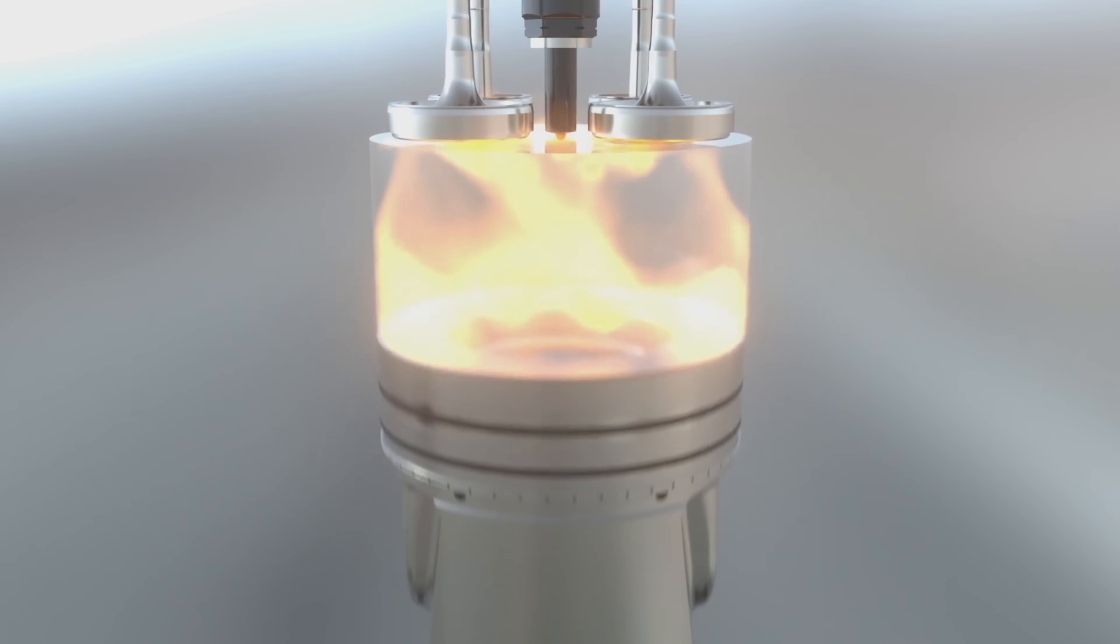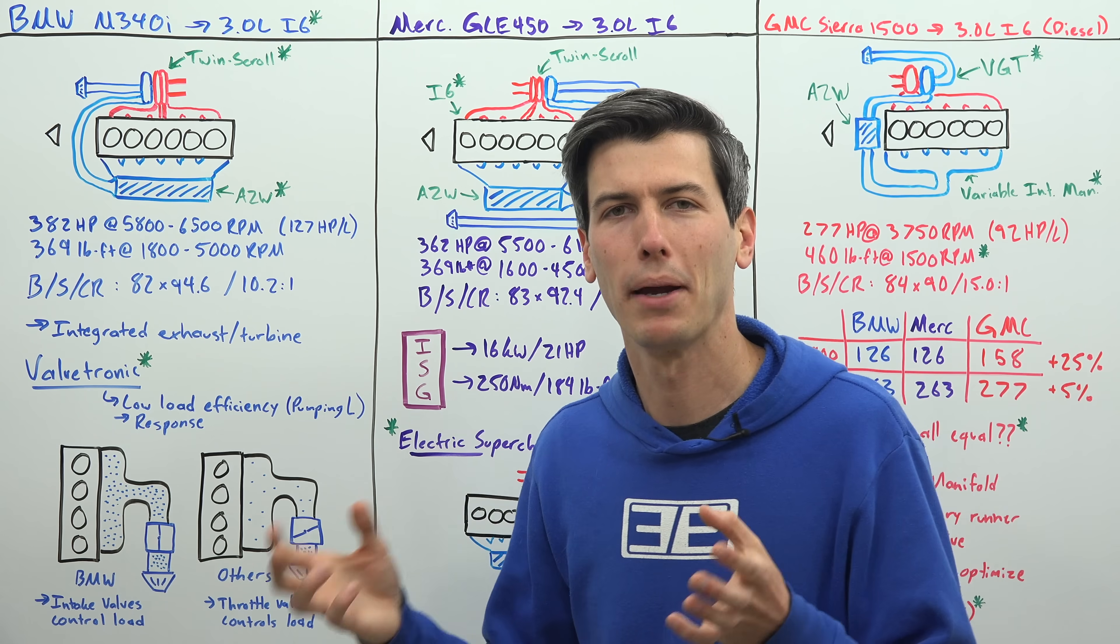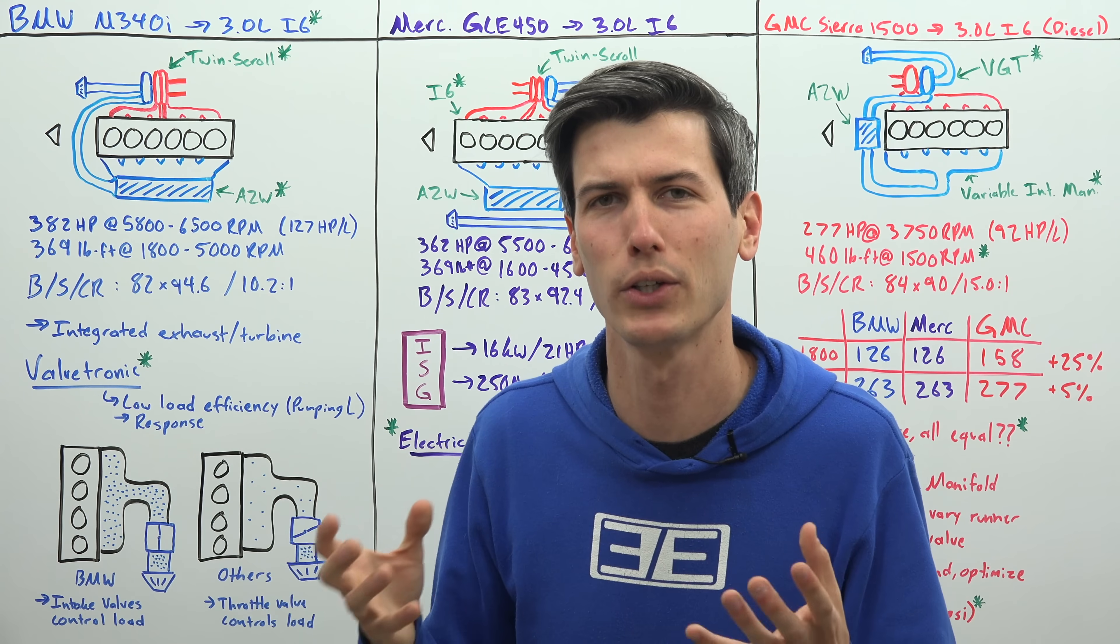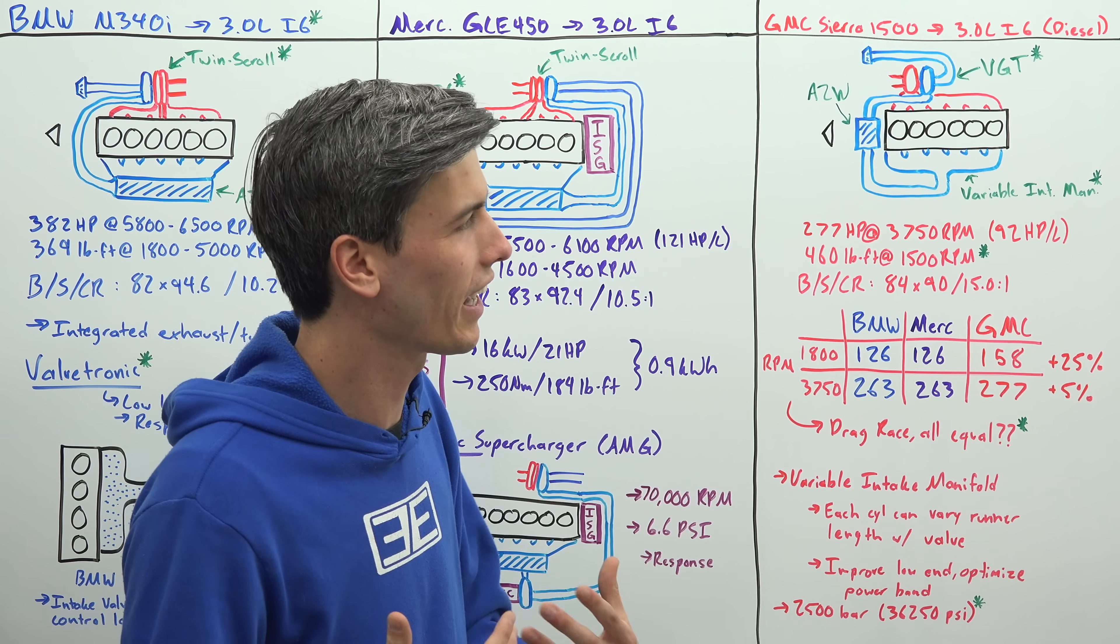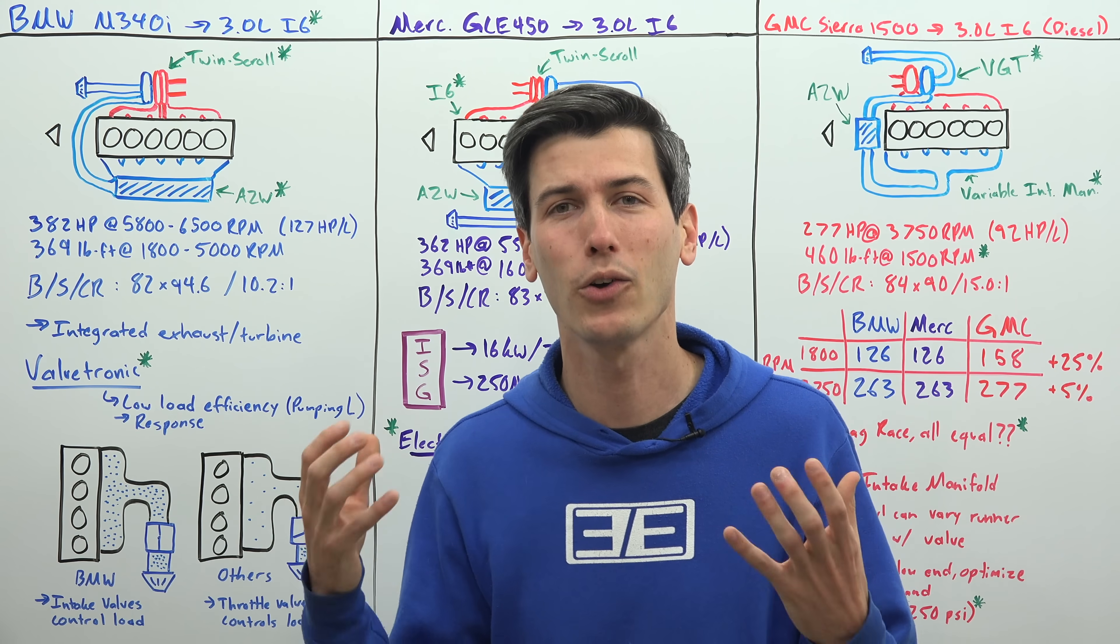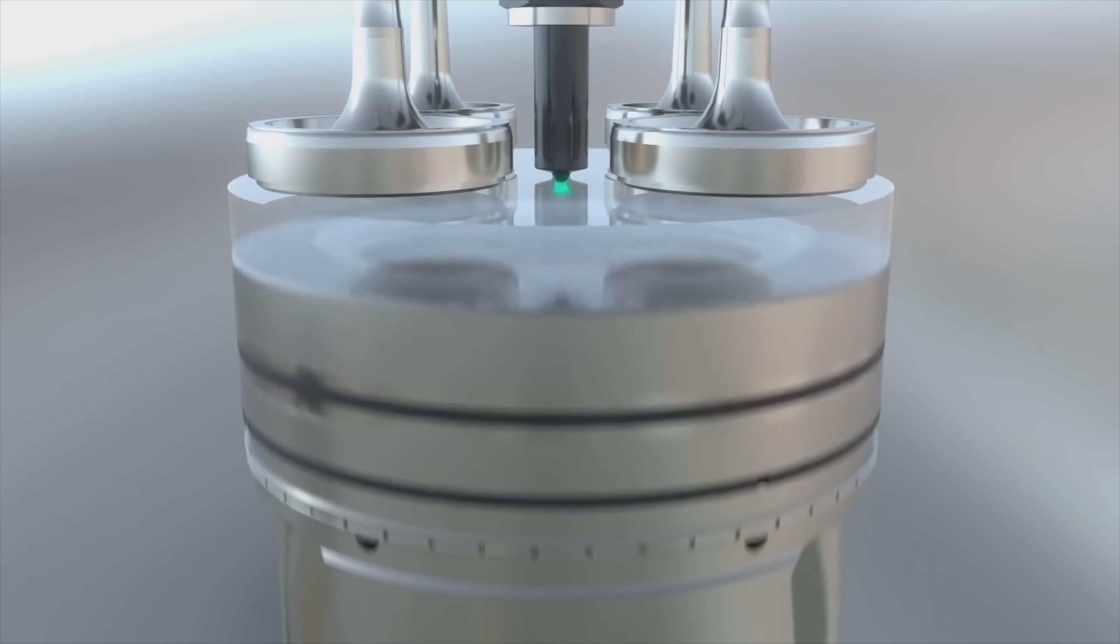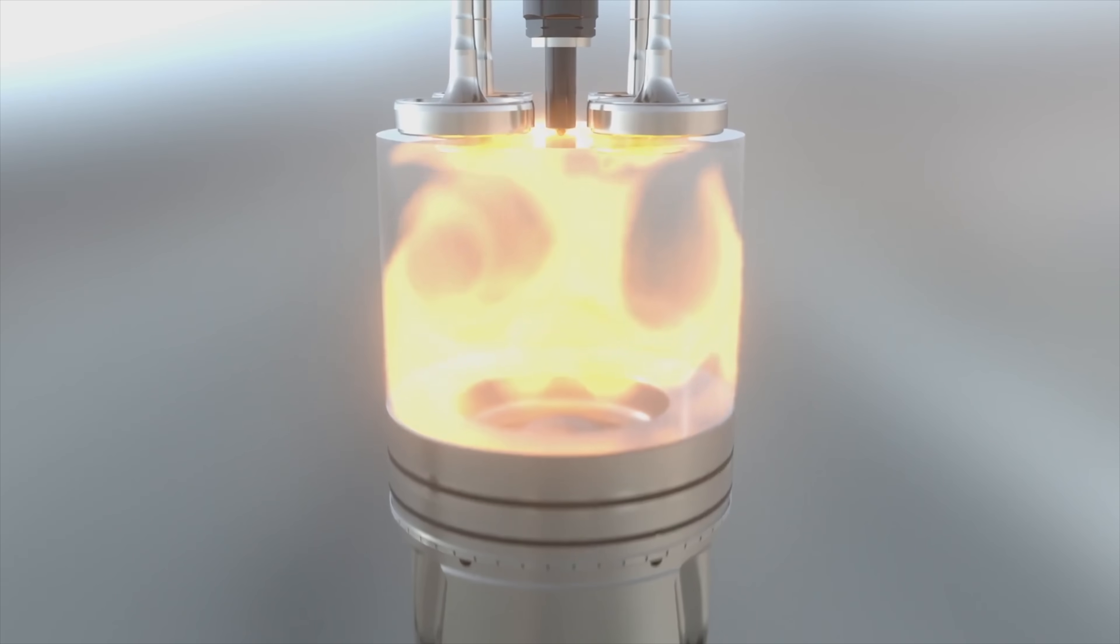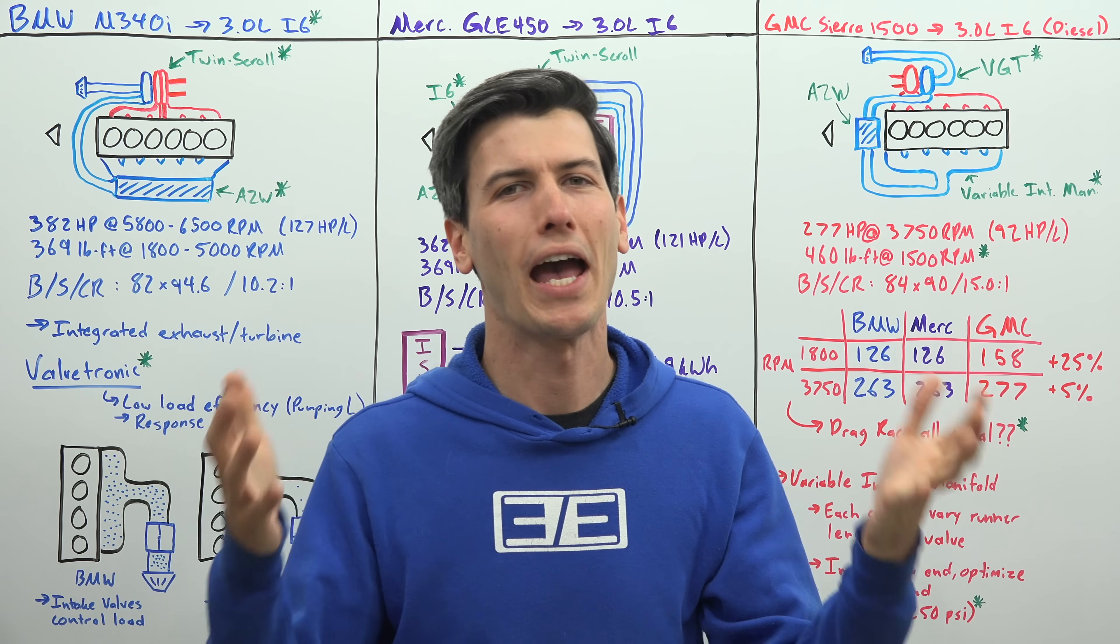Now an interesting comparison: this BMW gasoline engine actually has one of the highest fuel injection pressures I've seen on a gasoline engine, and that's 350 bar or about 5,000 psi. So the diesel engine here still seven times higher fuel injection pressure than that direct injection BMW engine.